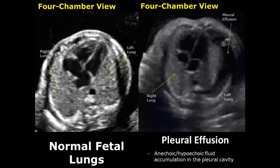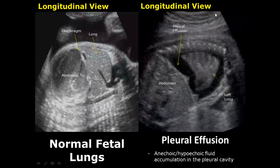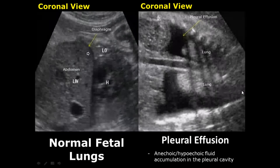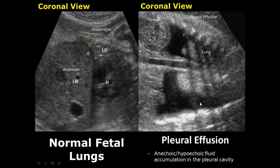Pleural effusion fluid appears anechoic or hypoechoic. Here we can see pleural effusion in the longitudinal view with fluid surrounding the lungs. In this coronal view, we can see bilateral pleural effusion with fluid surrounding both lungs.